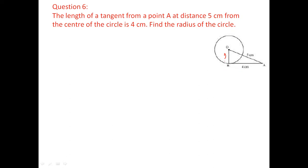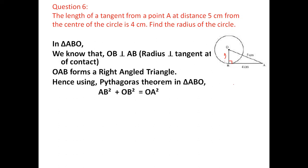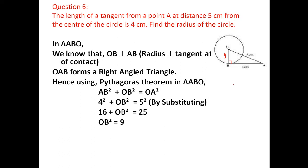By Pythagoras theorem: AB² + OB² = OA². So 4² + OB² = 5², giving 16 + OB² = 25, OB² = 9, OB = 3 centimeters. In all these problems Pythagoras theorem is applied.